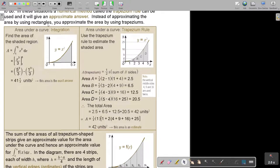Area under a curve - this is the exact value using integration. Find the area of the shaded region. It's between five and one with the given equation. I integrate, I substitute, so the exact answer is 41 and one-third units squared.